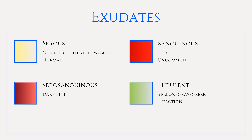Purulent exudate, also known as pus, is an abnormal type of drainage and is indicative of infection. It can be yellowish, green, to gray in color due to the white blood cells, dead cells, microorganisms, and various debris. Abscesses, cellulitis, and other infected wounds can have this type of exudate.